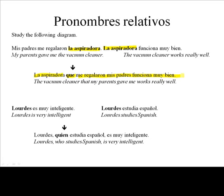'Lourdes es muy inteligente. Lourdes estudia Español.' Both are completely legitimate sentences that would work just fine. However, this is something that we do when we're just beginning studying a language. As things get more complex, we can make our sentences more complex. For example: 'Lourdes, quien estudia Español, es muy inteligente.' We've added the information from both sentences and made one more complex sentence.